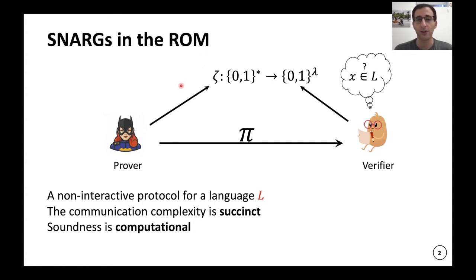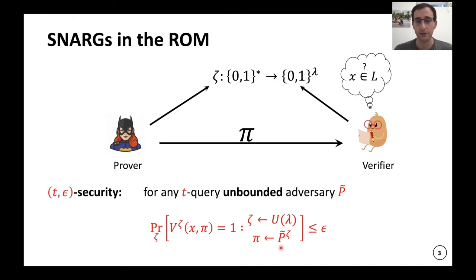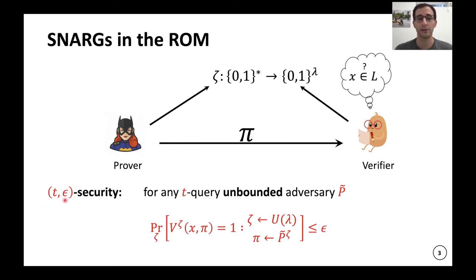The prover and verifier both have this shared resource — a truly random function that outputs lambda bits — and the security requirement is called T-epsilon security. For any computationally unbounded cheating prover P, the probability that this prover performs at most T queries and outputs a proof pi that makes the verifier accept is at most epsilon. So T bounds the number of queries the cheating prover is allowed, and epsilon bounds its success probability.